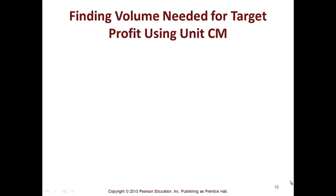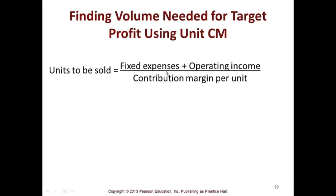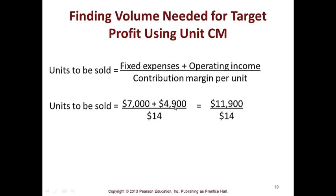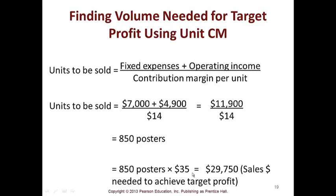Finding the volume needed for a target profit uses the same formula: units to be sold equals fixed expenses plus target operating income divided by contribution margin per unit. Here, $7,000 plus $4,900, divided by the $14 unit contribution margin, equals 850 posters. If a company has a target profit, given the assumptions in this problem, they'd need to sell 850 posters, which at $35 each equals $29,750 in sales needed to achieve that target profit.